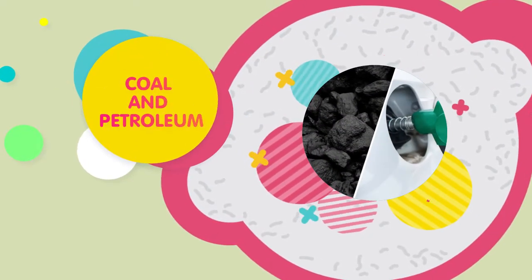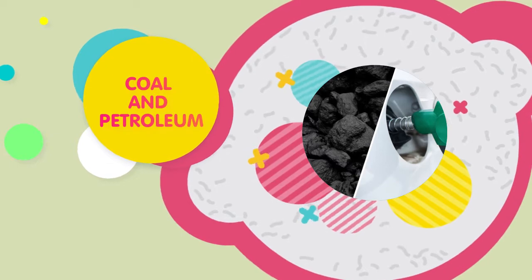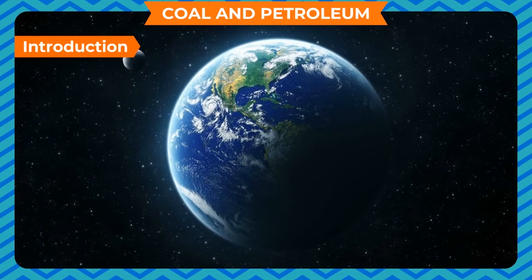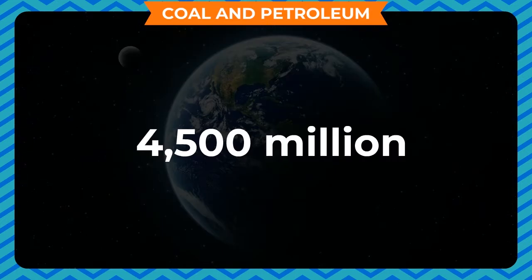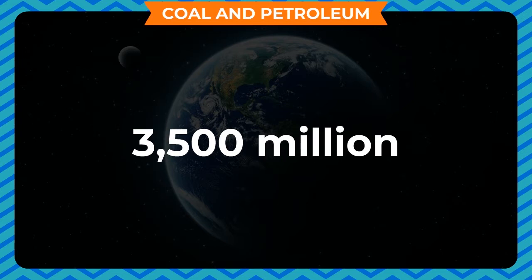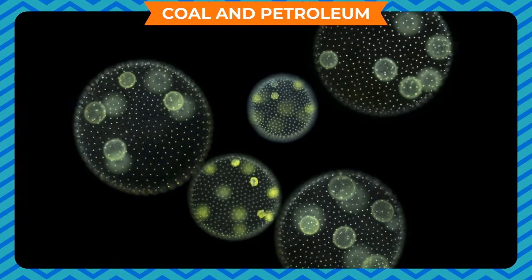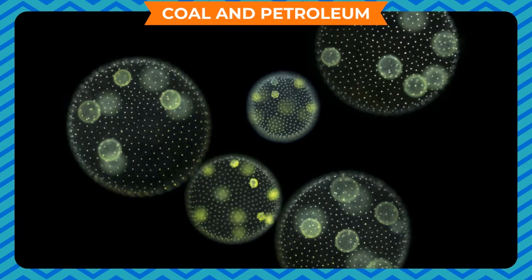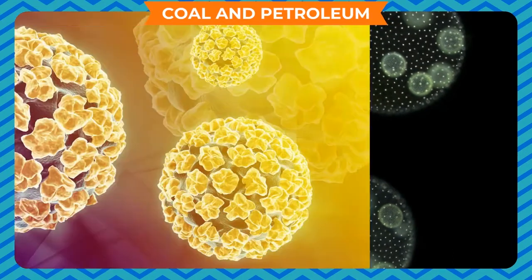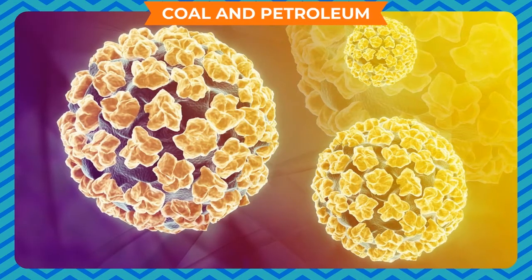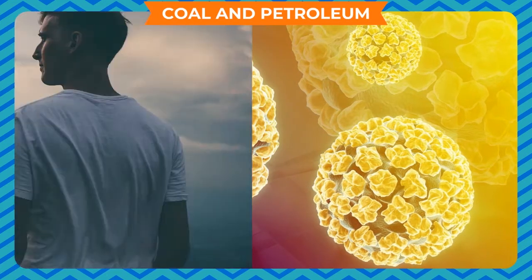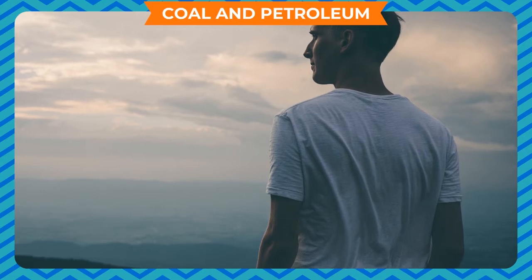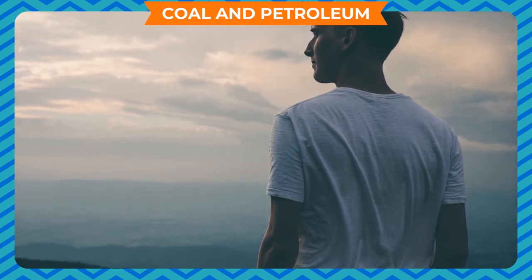Coal and Petroleum. Scientists believe that the earth was formed about 4500 million years ago and life originated about 3500 million years ago. It is believed that life originated in the form of unicellular organisms. Over millions of years, complex and multicellular forms of life evolved from these simpler forms. Man is the end product in this journey of evolution.